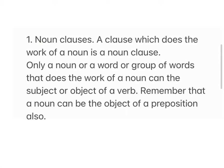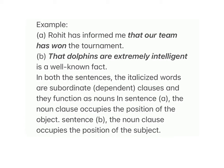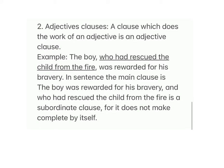Noun clauses: A clause which does the work of a noun is a noun clause. A noun or a group of words doing the work of a noun can be the subject or object of a verb, or the object of a preposition. Example A: 'Arav has informed me that our team has won the tournament.' Example B: 'That dolphins are extremely intelligent is a well-known fact.' In both sentences the italicized words are subordinate clauses functioning as nouns — in A as the object, in B as the subject.